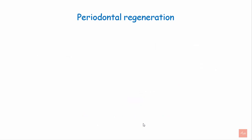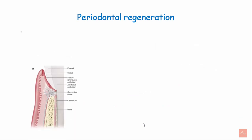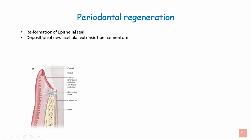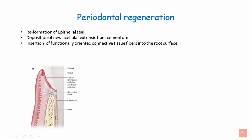Periodontal regeneration aims to reform the epithelial seal, the deposition of new acellular extrinsic fiber cementum, the insertion of functionally oriented connective tissue fibers into the root surface, and restoration of the alveolar bone height.